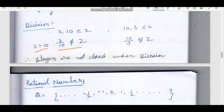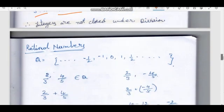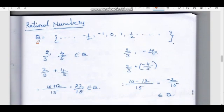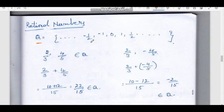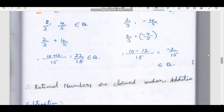Rational numbers are denoted by Q. Q equals {…minus 1/2, minus 1, 0, 1, 1/2…} and so on. For example, 2/3 and 4/5 belong to Q (P by Q form). Addition: 2/3 plus 4/5 — using cross multiplication: 2 times 5 equals 10, 3 times 4 equals 12, so 10 plus 12 equals 22 by 15, which belongs to Q. For subtraction: 3/4 minus 6/5 — 3 times 5 equals 15, 4 times 6 equals 24, so 15 plus 24 equals 39/20, which belongs to Q.